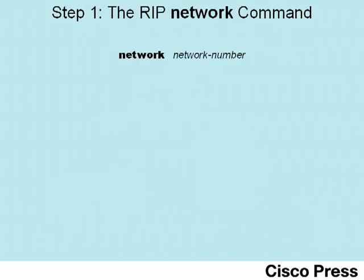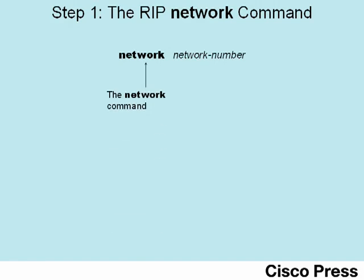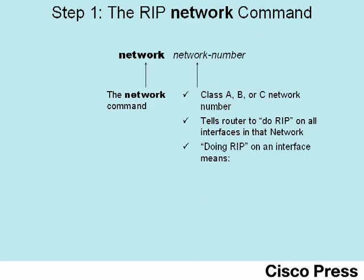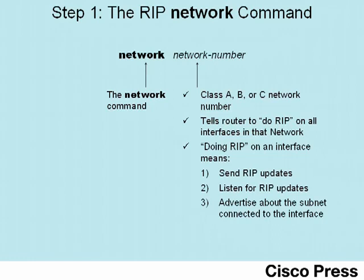The RIP configuration starts with the router RIP command, which puts you in RIP configuration sub-mode. The network command tells the router on which interfaces to enable RIP. The network command uses a class A, B, or C network number as its parameter. The router then asks which of its interfaces are in that network and enables RIP on those interfaces — meaning sending RIP updates, listening for incoming RIP updates, and advertising about that connected subnet.